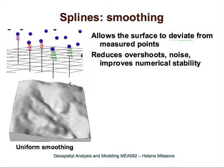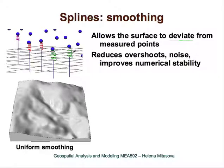Here we have a resulting surface with low tension and uniform smoothing. A nice thing about the smoothing parameter is that we can apply it to individual points, so we can have different smoothing for different points. You can interpret this smoothing as the stiffness of springs — some points may allow the surface to deviate more than others. For example, if a point is very accurately measured, we want to pass as close to it as possible, but for a point measured with poor equipment, we allow much more smoothing.